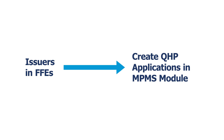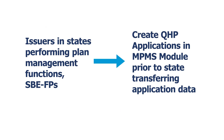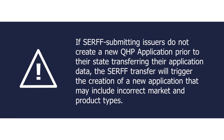Issuers create new QHP applications in the QHP Application section of the MPMS module. Issuers in states performing plan management functions and SBEFPs must create an application in the MPMS module before their state transfers their data from SURF. This ensures the correct market and product types are associated to the application. If SURF-submitting issuers do not create a new QHP application prior to their state transferring their application data, the SURF transfer will trigger the creation of a new application that may include incorrect market and product types.